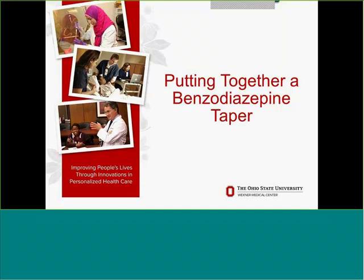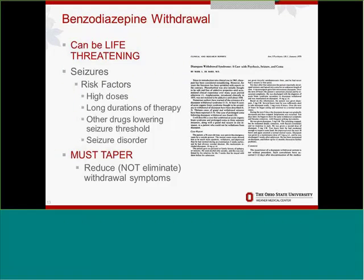Why do we have to taper benzodiazepines? Unlike opioids, we're pretty much required to taper because it can be life-threatening — patients can have seizures. When a patient takes a benzodiazepine, changes occur in that GABA receptor and it becomes less sensitive to normal GABA in the body. If you take away the benzo, they're at higher risk for seizures. Other risk factors include high doses taken for long durations, other medications that lower the seizure threshold like carbamazepine, bupropion, metronidazole, and some antibiotics, and patients with an underlying seizure disorder.